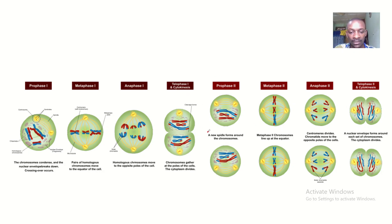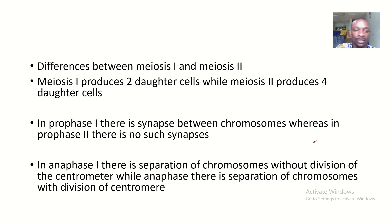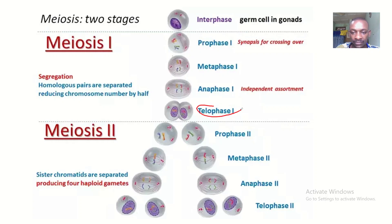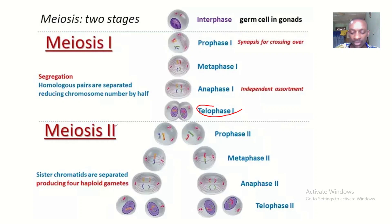You can see where the two processes become different. I would prefer using this image here. Myosis 1 is from interphase to telophase 1, while myosis 2 is from prophase 2 to telophase 2.